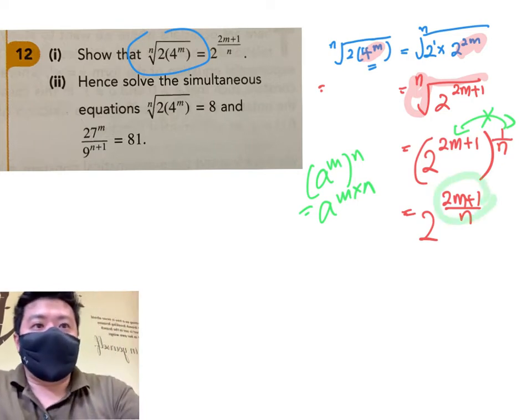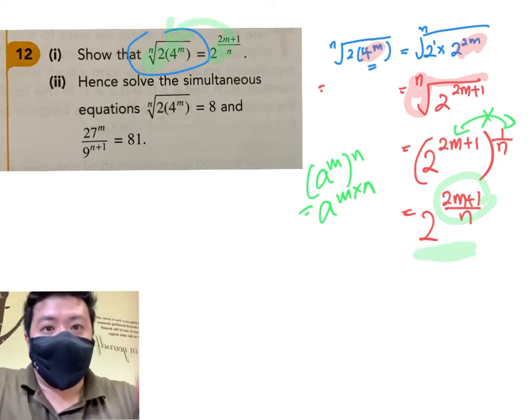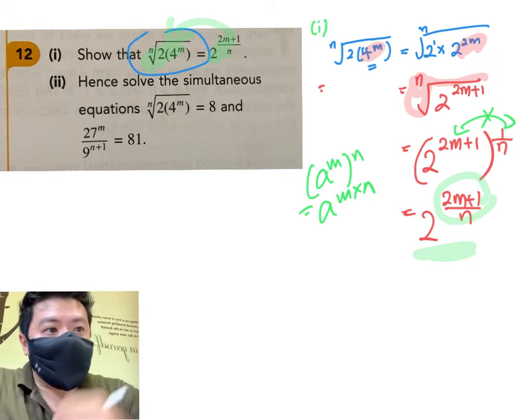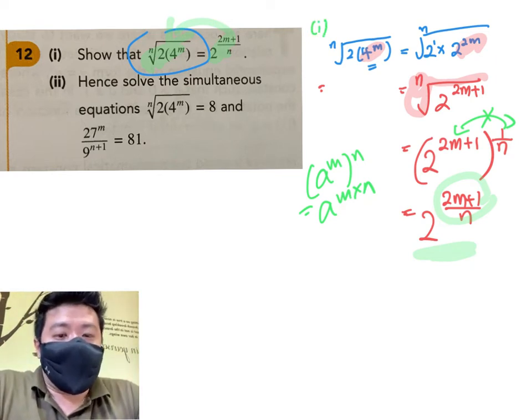So with that, we are done. You can see, I've shown that my left is equal to my right hand side. I'm done already for part 1. So hence, next, we have to solve the simultaneous equation.